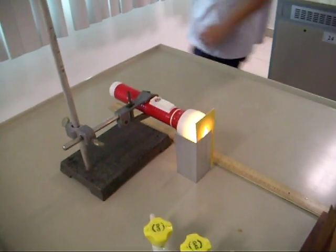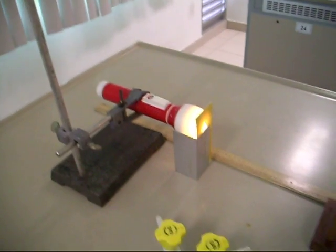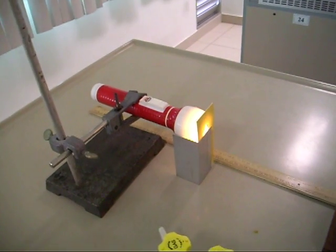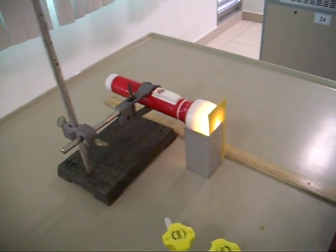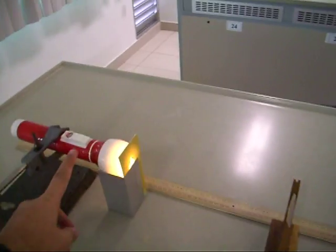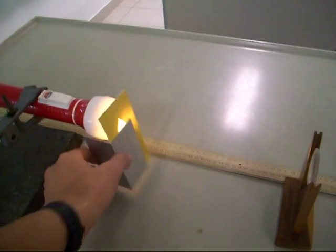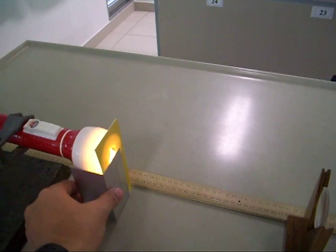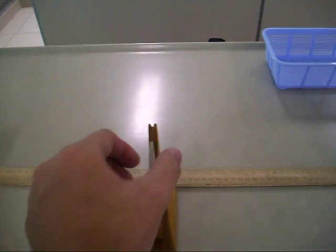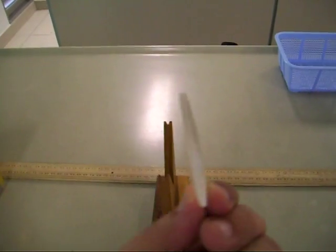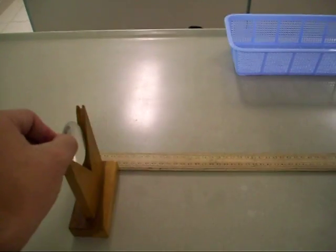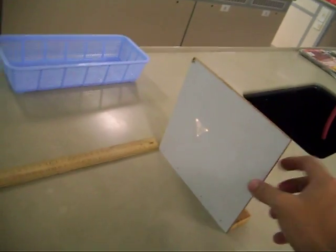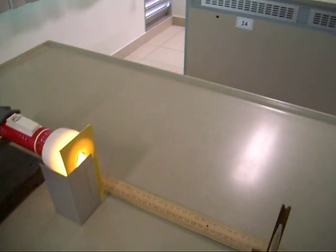We are going to revise an experiment on lenses. We have a torchlight and an object placed near the torchlight, a thin converging lens placed on the holder, and a screen.